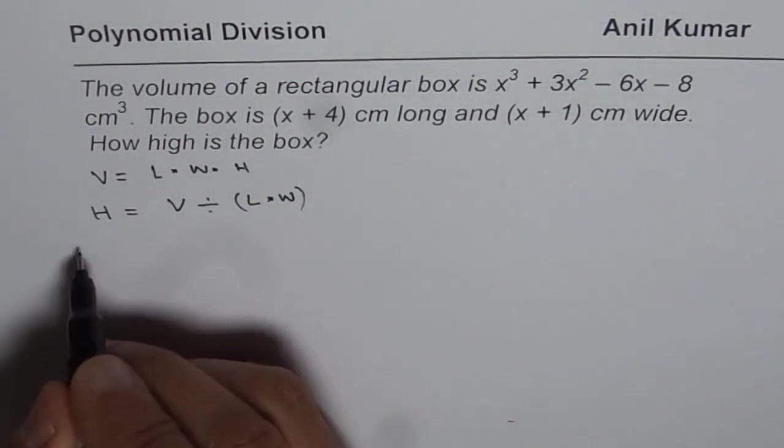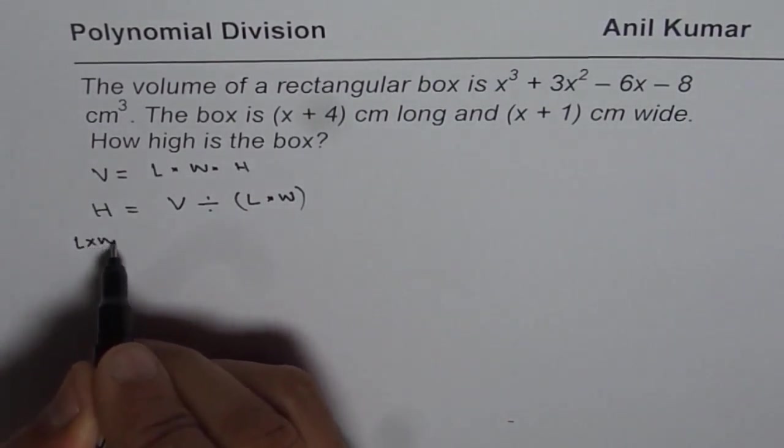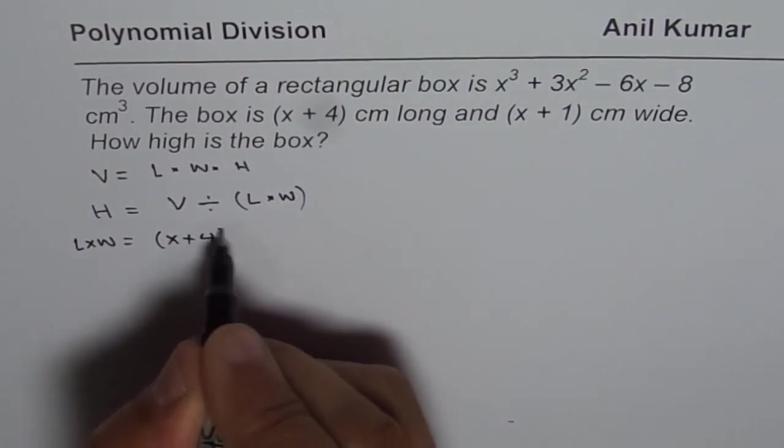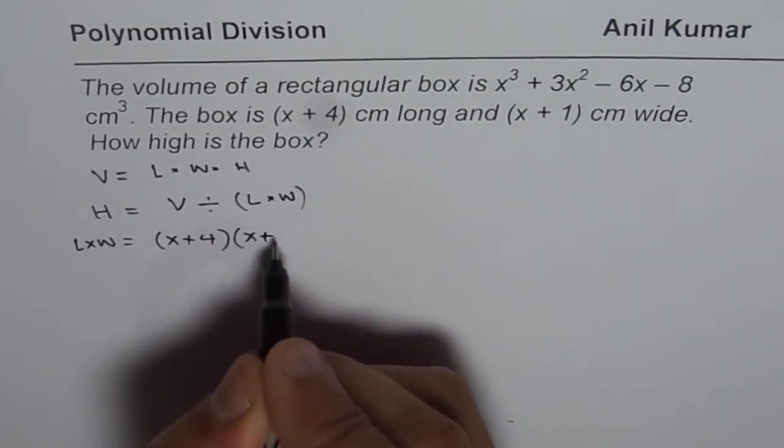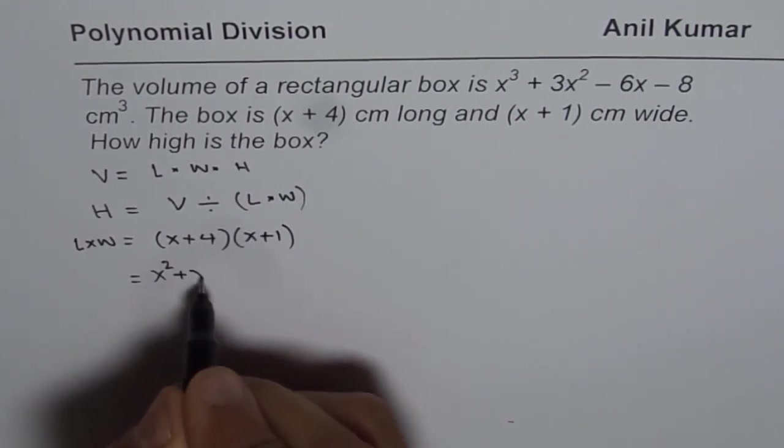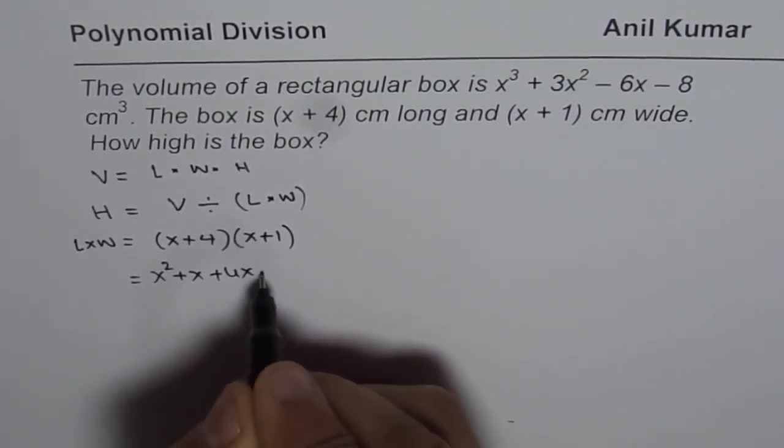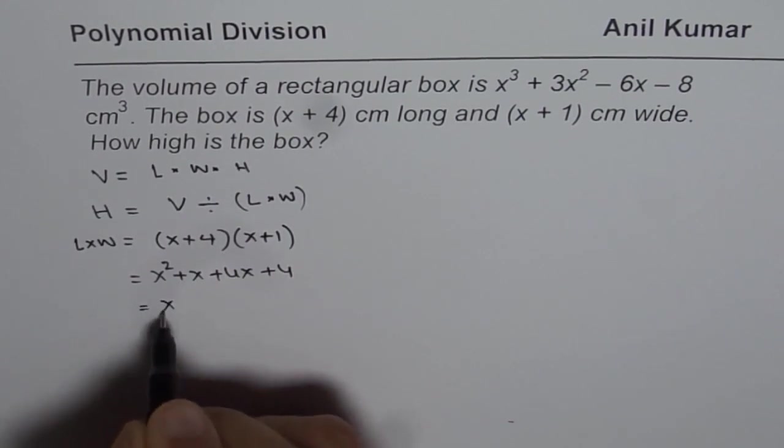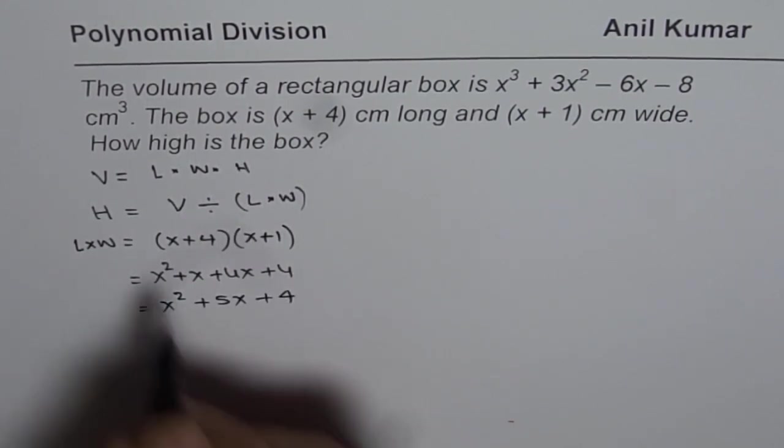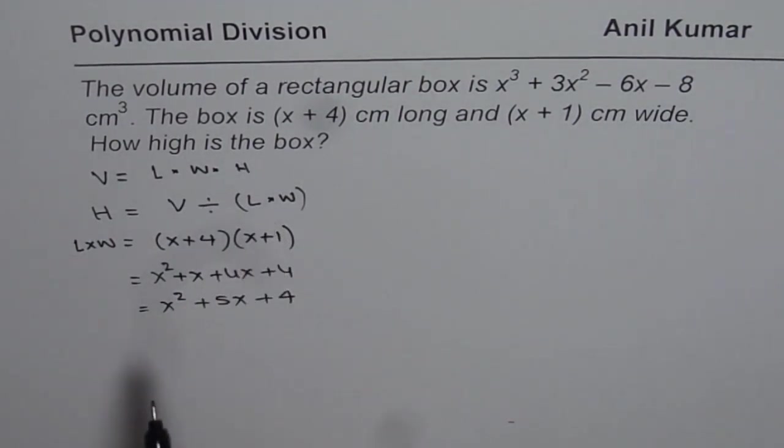We need to find length times width and then we will divide and get our solution. Let us first find what is length times width. Length times width is (x+4) times (x+1). When you multiply that you get x² + x + 4x + 4 or x² + 5x + 4. That is the length times width.